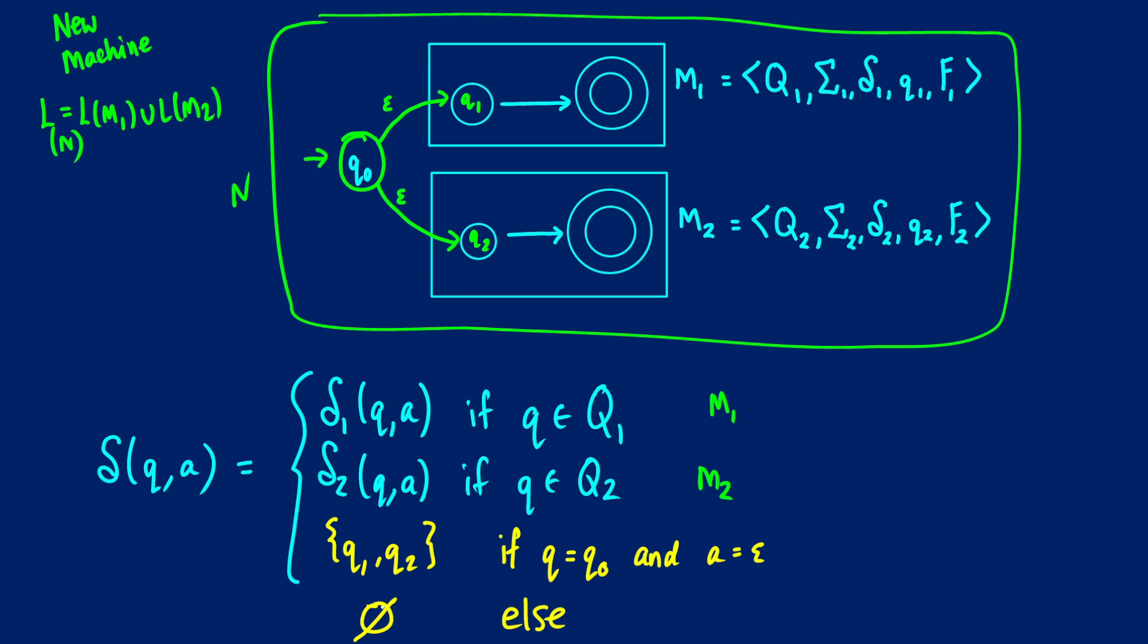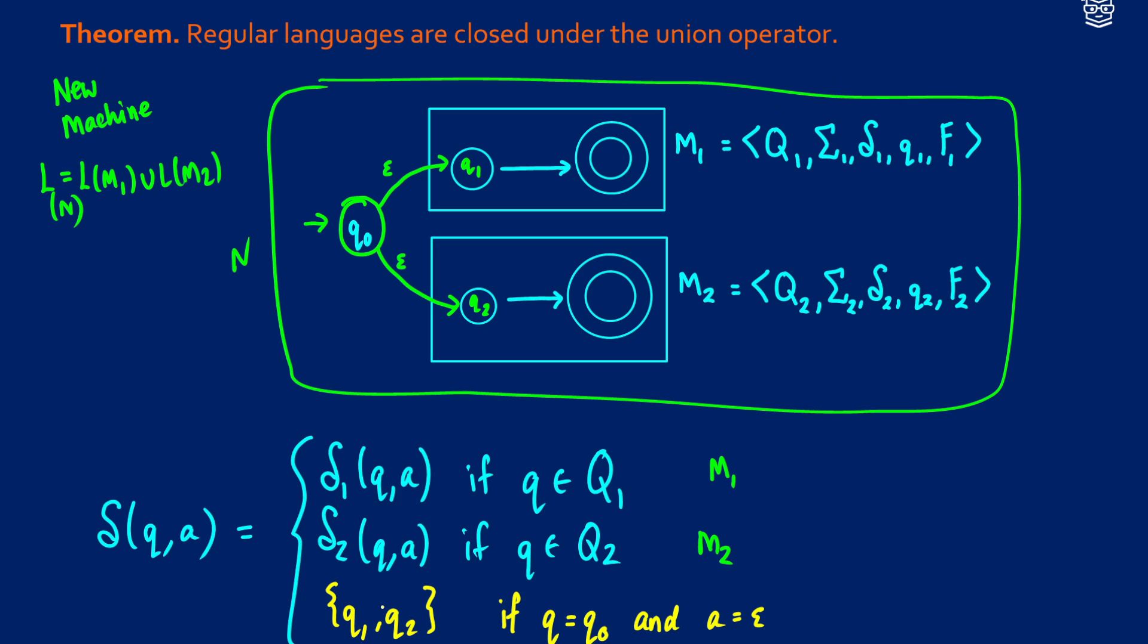So in this case, we have now proven our theorem that regular languages are going to be closed under the union operator. If L1 is a regular language and L2 is a regular language, we can construct NFAs for those. We can construct an NFA that accepts the union of both. Therefore, regular languages are also closed under that union operator.